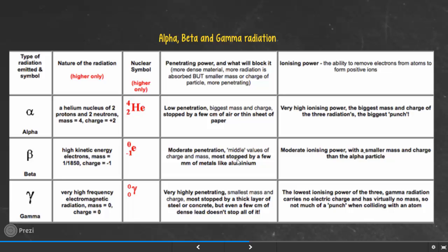There are three types of radiation: alpha, beta, and gamma. Alpha radiation is made up of a helium nucleus — two protons and two neutrons — so its mass number is four and its charge is plus two. Beta radiation is made up of high kinetic energy electrons, with a mass of 1/1850 and a charge of minus one. Gamma radiation is very high frequency electromagnetic radiation with a mass of zero and a charge of zero. For alpha, two neutrons plus two protons gives a mass of four; for beta, electrons have virtually no mass so the mass number is effectively zero and atomic number is minus one; gamma has no protons, electrons, or neutrons.